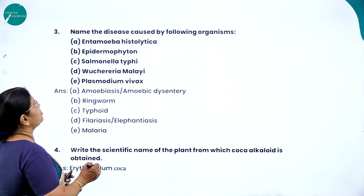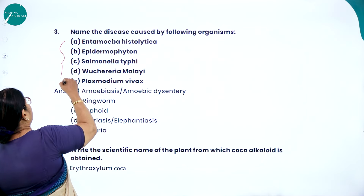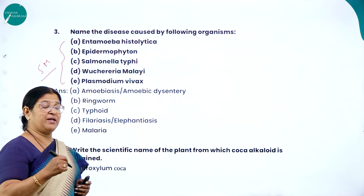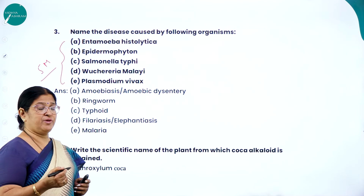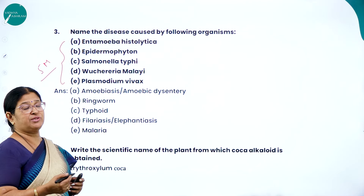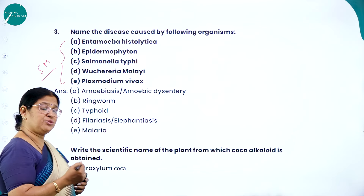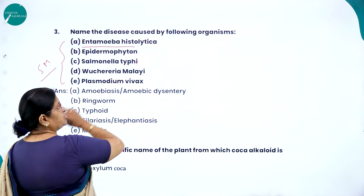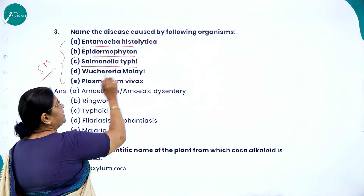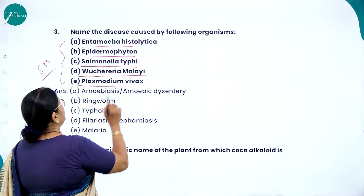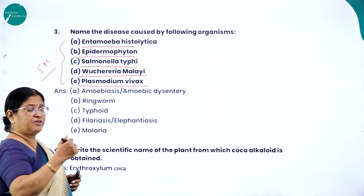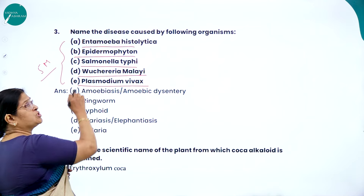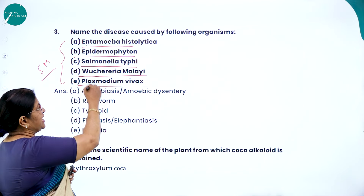Next, name the disease caused by the following organisms — this is a five-mark question. For five-marker questions, split questions like these are also asked, and they are scoring and easy to answer because they are point-to-point. The organisms listed are: (a) Entamoeba histolytica, (b) Epidermophyton, (c) Salmonella typhi, (d) Wuchereria bancrofti, (e) Plasmodium vivax. For each one correct answer you score one mark.